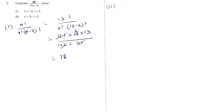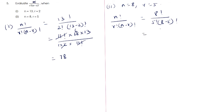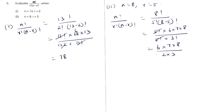Second subdivision: n = 8, r = 5. So 8! / (5! × (8 - 5)!) = 8! / (5! × 3!). Writing 8! as 5! × 6 × 7 × 8, this becomes (5! × 6 × 7 × 8) / (5! × 3!). The 5 factorials cancel, giving (6 × 7 × 8) / (1 × 2 × 3) = 336 / 6 = 56.